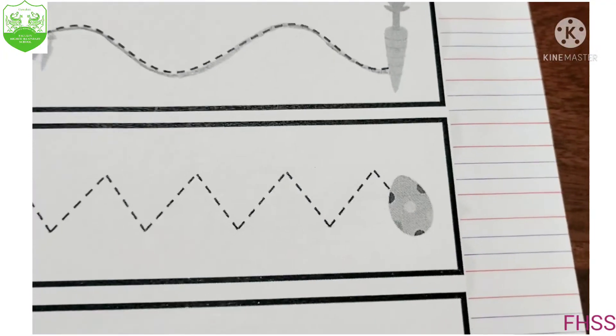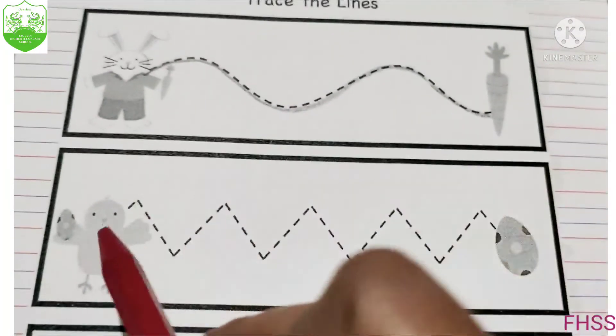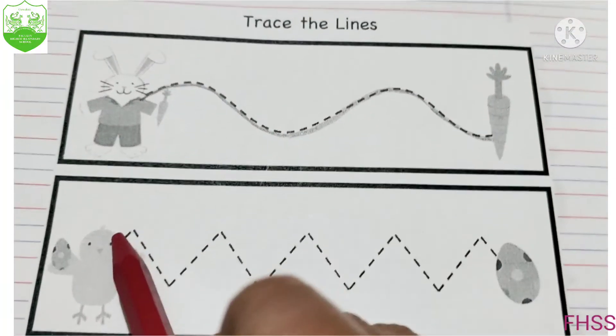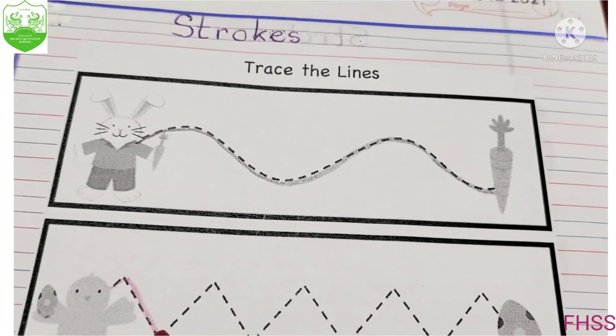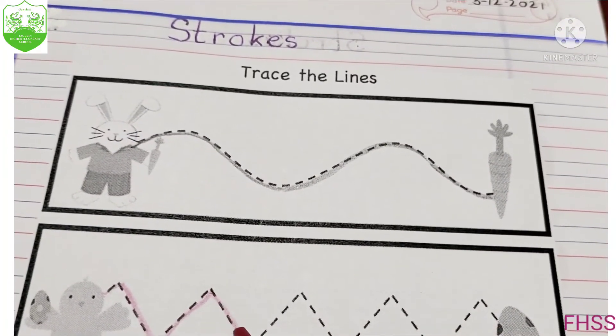The next one also I will do for you all. I will help the bird to reach the egg. I will start from here. Like this. Again come down. Again go up. Again come down.